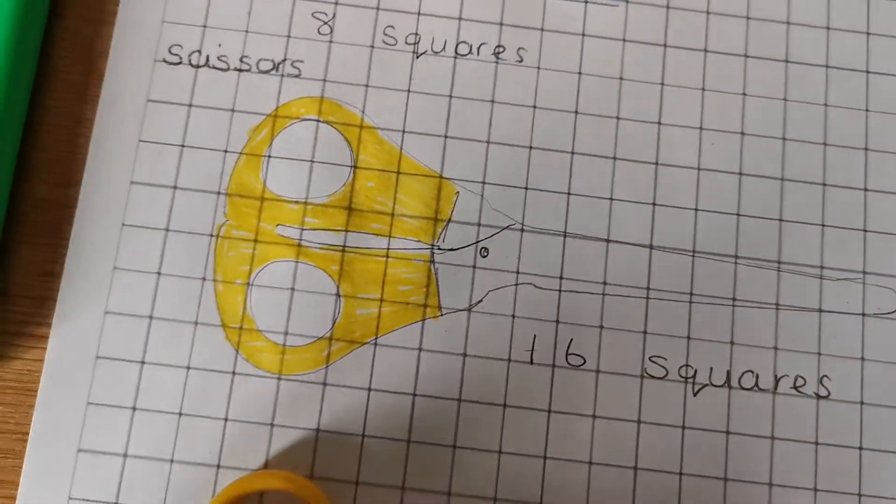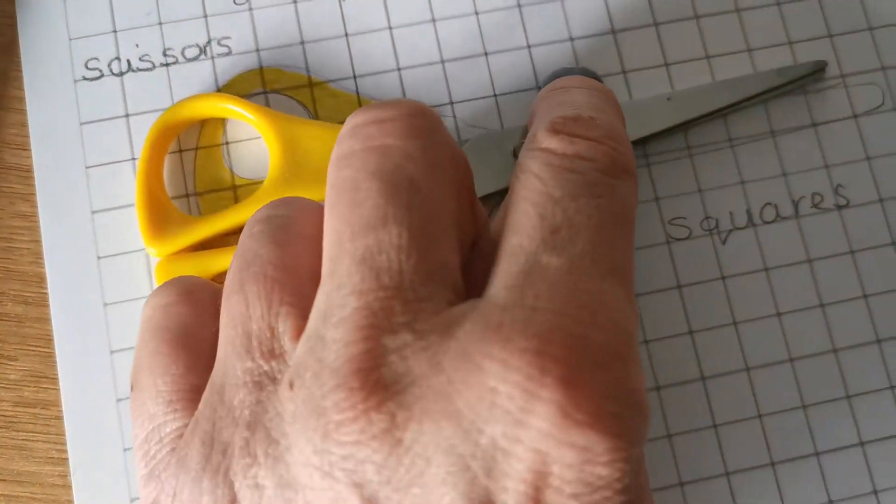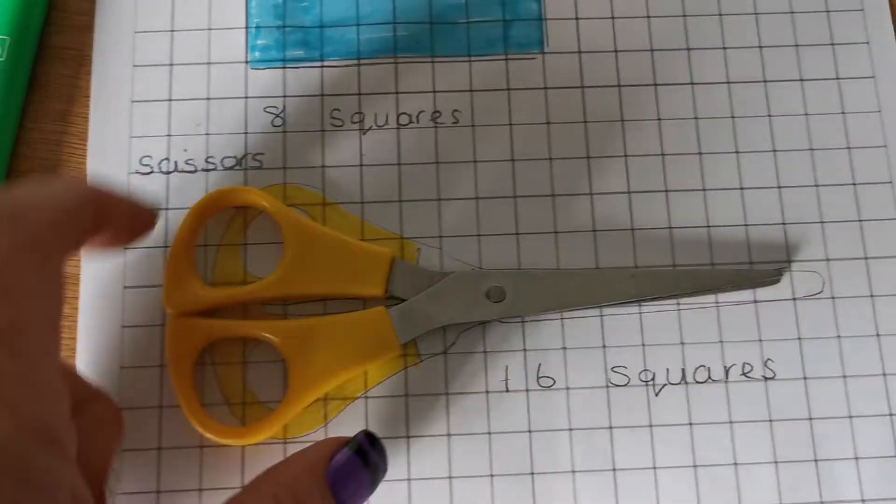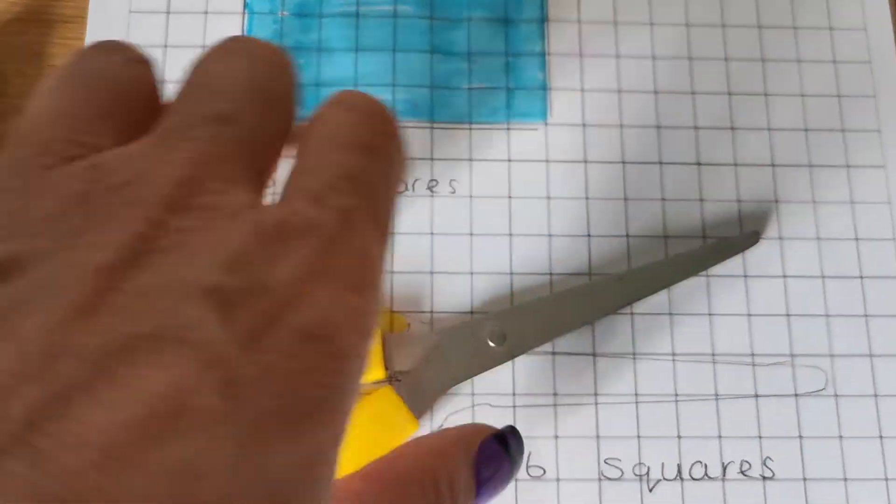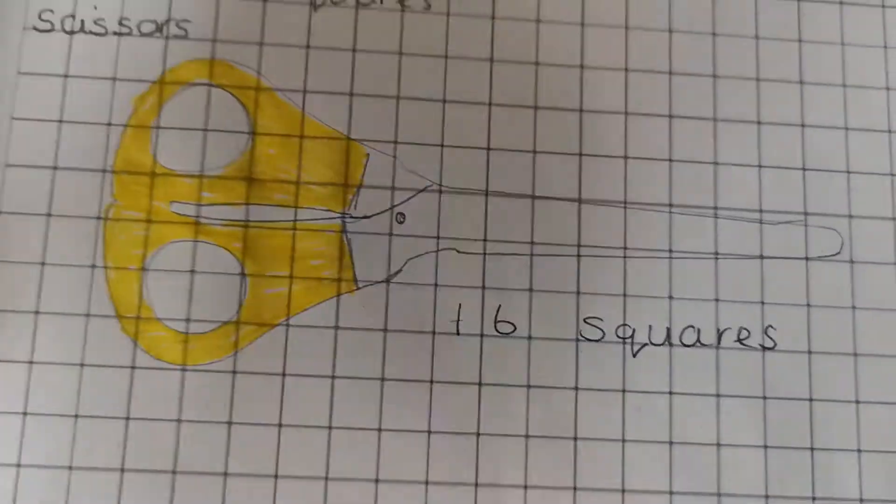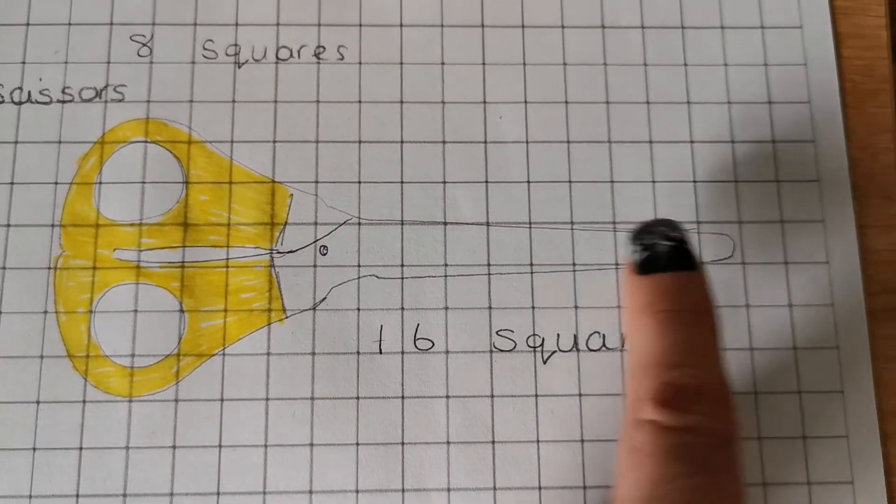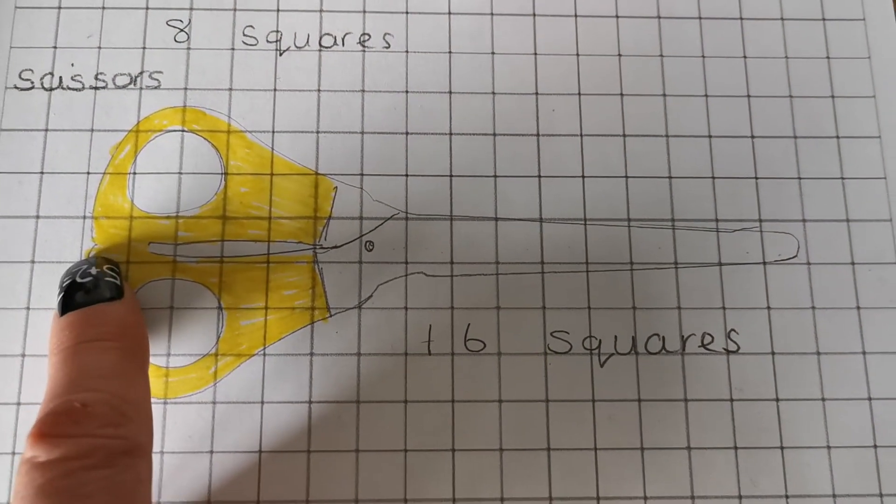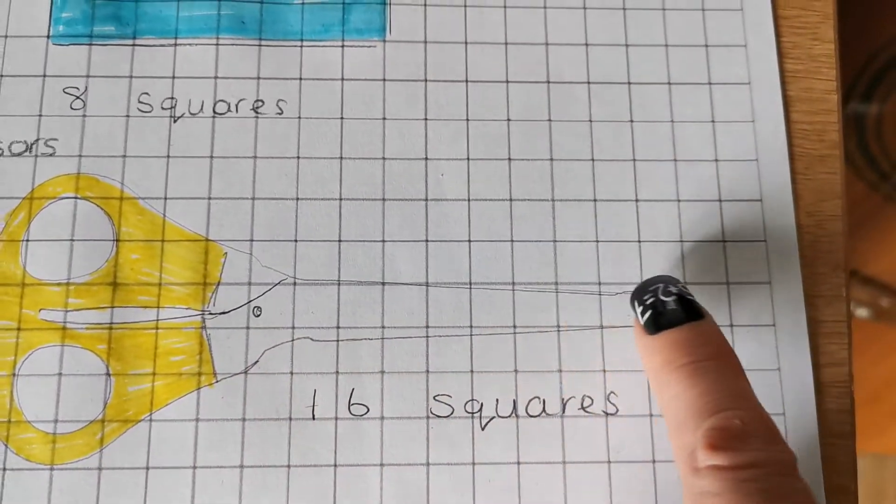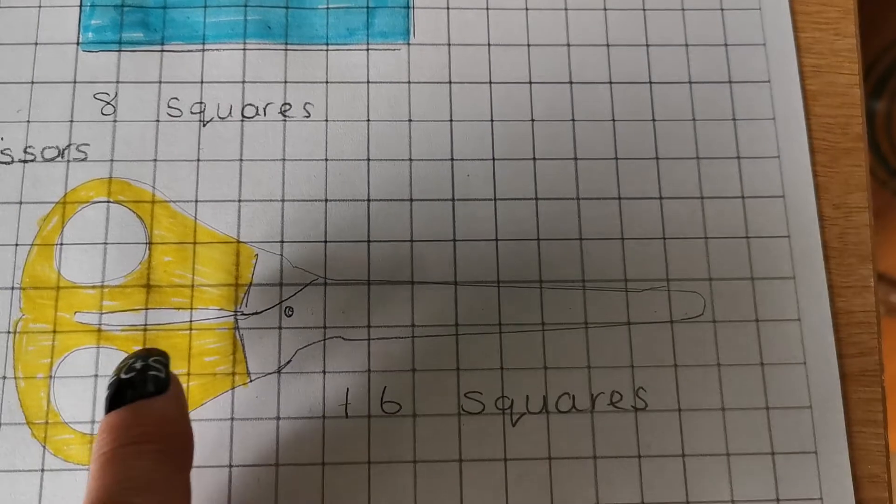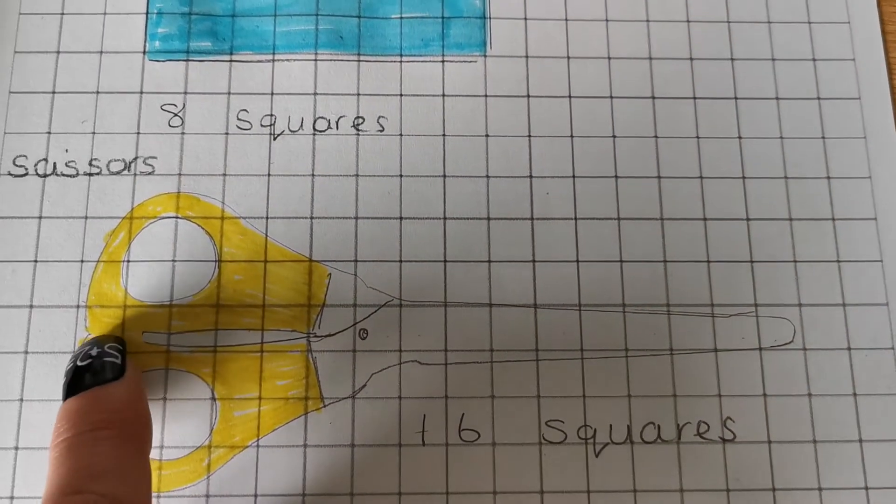Now, the scissors are a little bit more tricky to draw around. But I did it. So I drew round them. And because the handles were yellow, I coloured the handles in yellow. You don't have to do that. Now, remember, I'm measuring how long it is. So the longest part. So from, I thought the longest part was there. Starting there and going up to that square there. So I counted the squares from there to there. And it was.